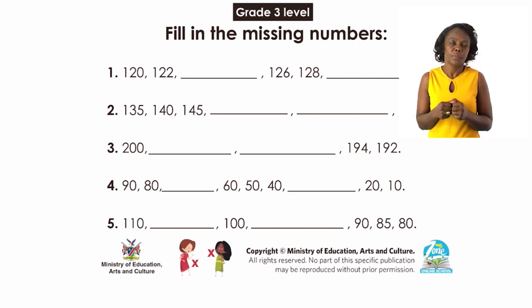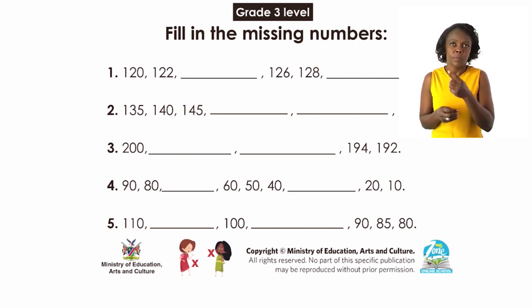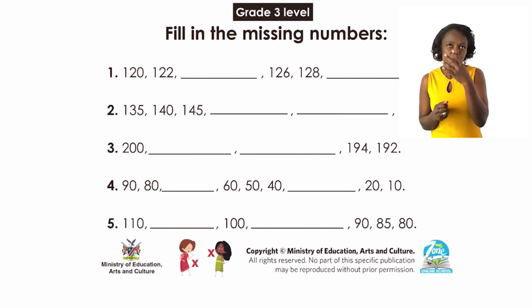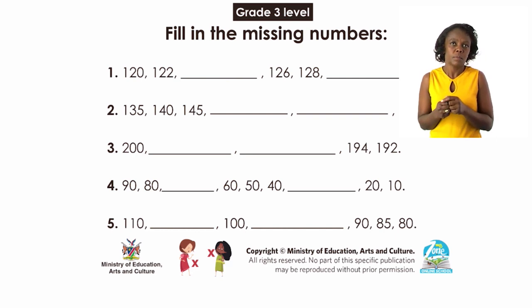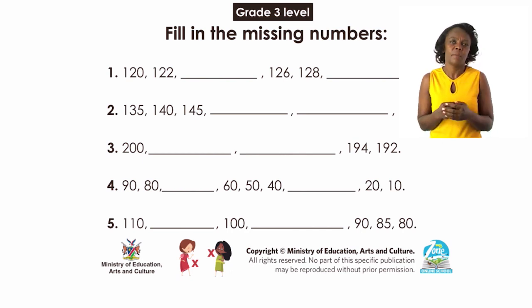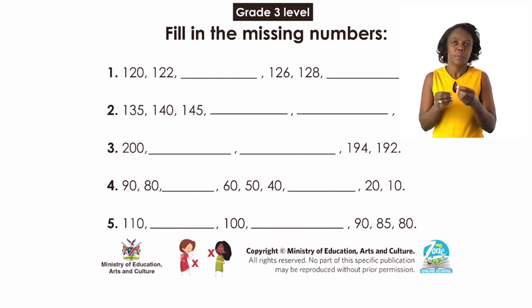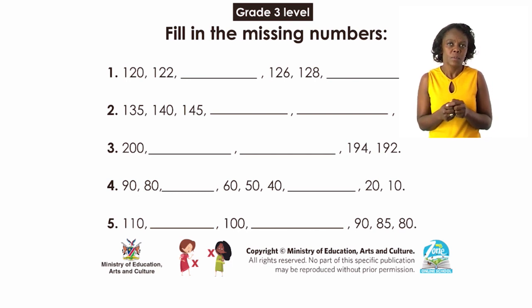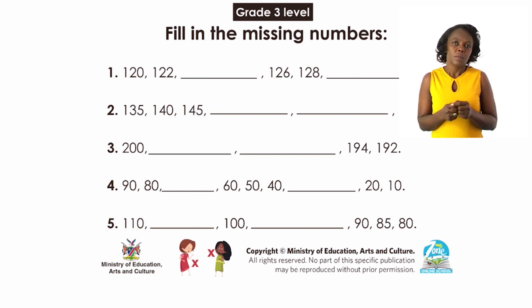Then that will be easy for you. Now let's see number 2: 135, 140, 145. What are they counting in? Are they still counting in 2? No, no, no. Find out which number they are counting in. If they are counting in 5, then continue filling in the 2 numbers. You continue to number 3. Number 3 is a bit challenging but they have made it simple by giving us the 2 last numbers, which will give us a clue about which sequence they are counting in.